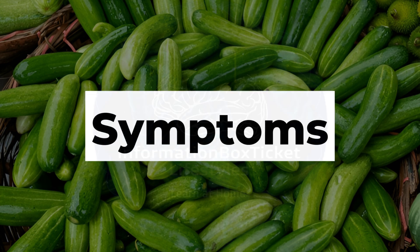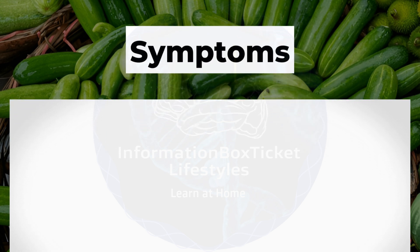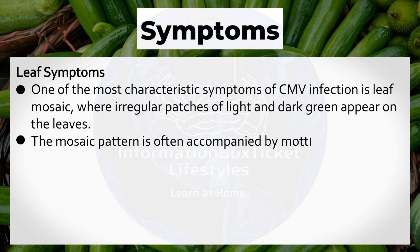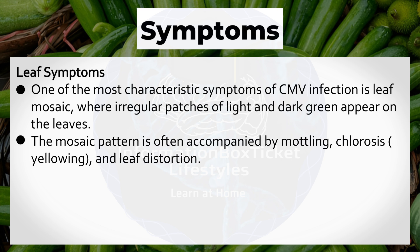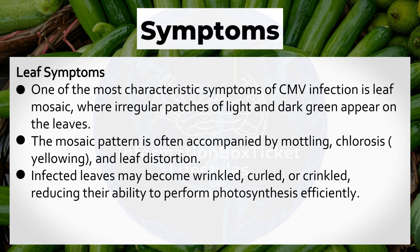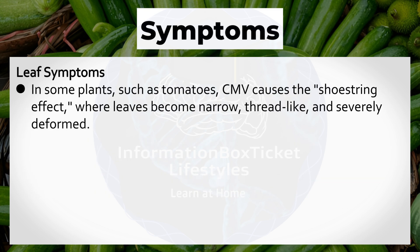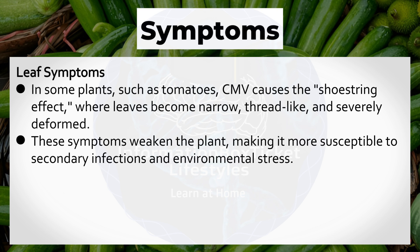Leaf Symptoms: One of the most characteristic symptoms of CMV infection is leaf mosaic, where irregular patches of light and dark green appear on the leaves. The mosaic pattern is often accompanied by mottling, chlorosis, yellowing, and leaf distortion. Infected leaves may become wrinkled, curled, or crinkled, reducing their ability to perform photosynthesis efficiently. In some plants, such as tomatoes, CMV causes the shoestring effect, where leaves become narrow, thread-like, and severely deformed. These symptoms weaken the plant, making it more susceptible to secondary infections and environmental stress.